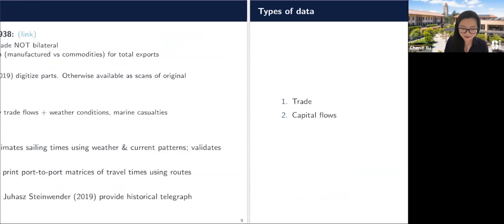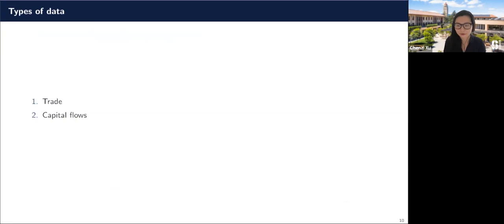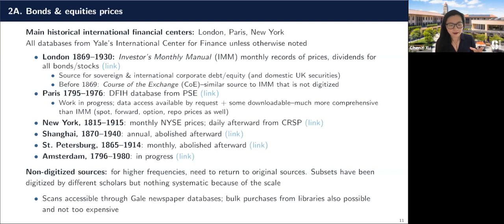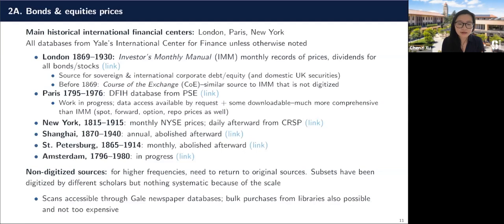That's it for trade data. The next set of data that are very easily accessible are capital flows. Within capital flows, first we have good data on securities prices — security volumes are a little bit more difficult, but within some of these datasets you'll be able to reconstruct the volume of flows. These price data are coming from major international financial centers — cities like London, Paris, New York, Amsterdam — and they will include international securities that might be particularly interesting, like sovereign bonds and international corporate equities, which actually did exist at this time.